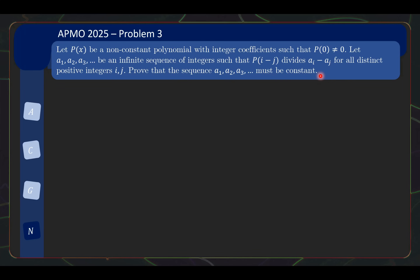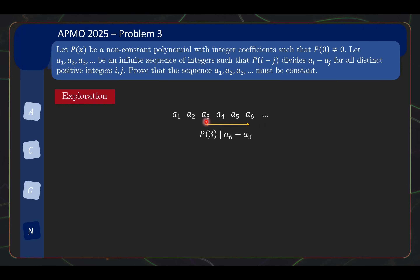Let's begin with some exploration, and hopefully that helps you digest the problem statement a bit as well. Basically, what this is saying is that you have a sequence, and whenever you look at two terms whose indices differ by some number — say A3 and A6, the indices differ by 3 — then P(3) will divide the value A6 minus A3.